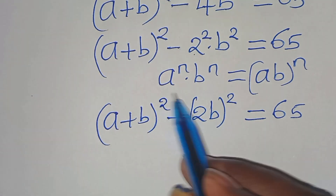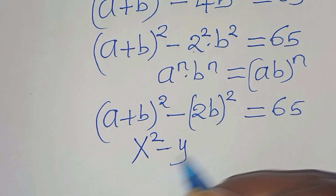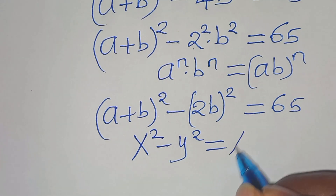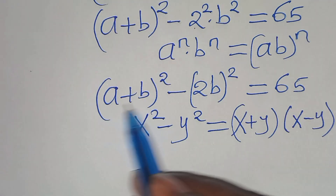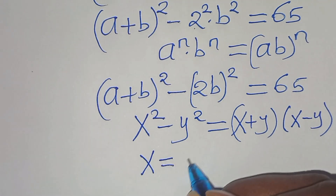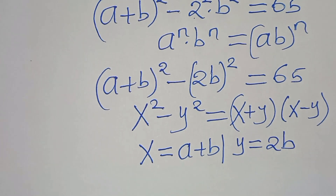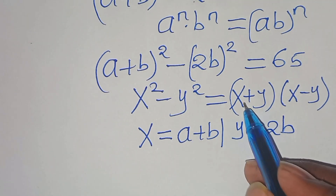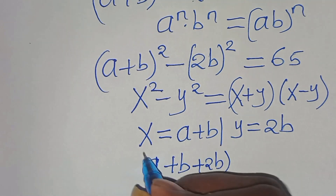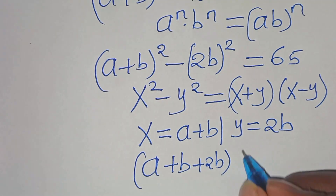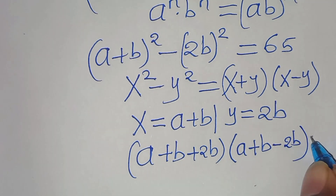Now, a plus b to the power of 2 minus 2b to the power of 2 is in the form of x squared minus y squared, which is the difference of two squares expressed as x plus y times x minus y. Here x is equal to a plus b and y is equal to 2b. So we have a plus b plus 2b multiplied by a plus b minus 2b, equal to 65.